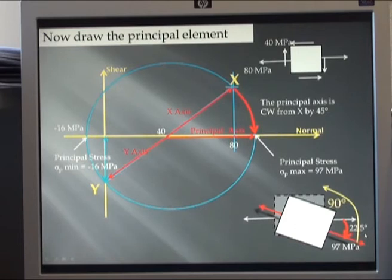My other axis for my element is 90 degrees away on my element. Therefore it will be 180 degrees away here. And that will be my minus 16 value. Minus 16 means my arrows are compressive. Take that stress and write it onto there. That's my element completed.